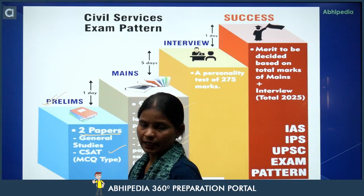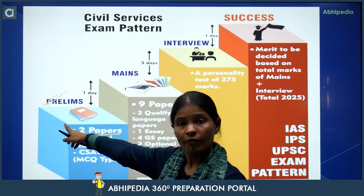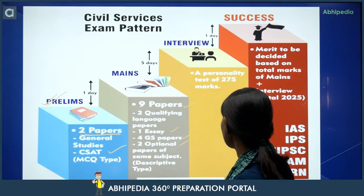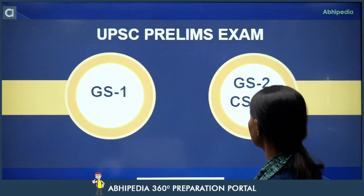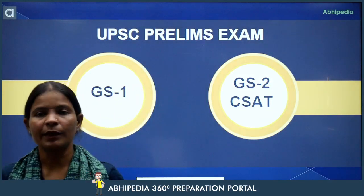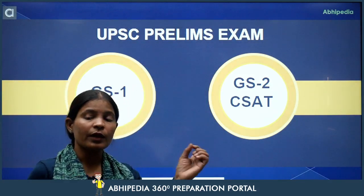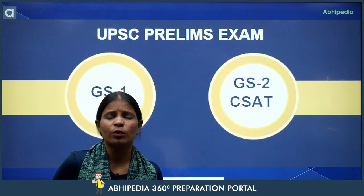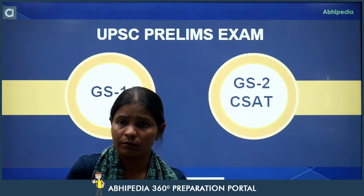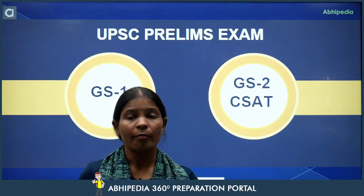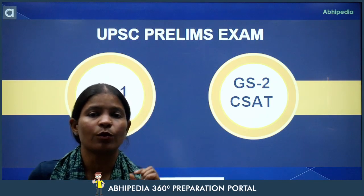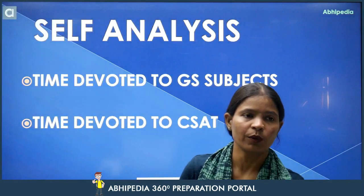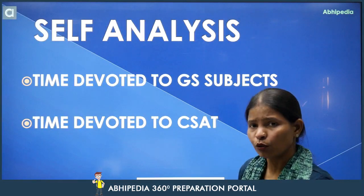Kyunki jab hamne final stage tak pahunchna hai, toh sabse pahle first step ko clear karna hoga. Jab hum baat karte hain first step ki — that is prelims — aap jab prelims ke exam ke andar aapne do paper, that is GS paper one and GS paper two, that is CSAT. Sabhi ki different-different strategy hai exam ke liye preparation ke liye. Ek student kehta hai ki main ten to twelve hours apne study pe devote kar raha hun, ek kehta hai main sodha ghante pad raha hun. Sabhi ka apna-apna method hai, sabhi ka apne-apne weakness or strength pata hai. Toh ek baar sabhi ne self analysis zaroor karna hai — ab sabhi ne dekhna hai ki aap kitna time devote kar rahe ho in dono papers ke liye.